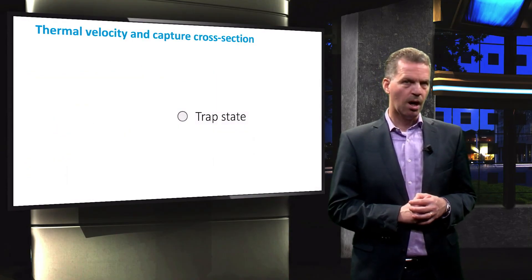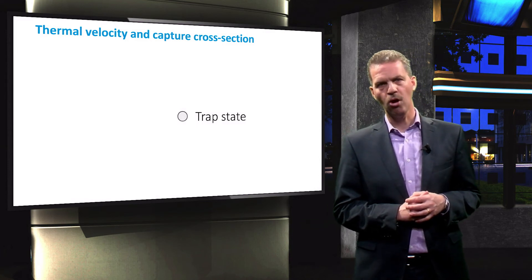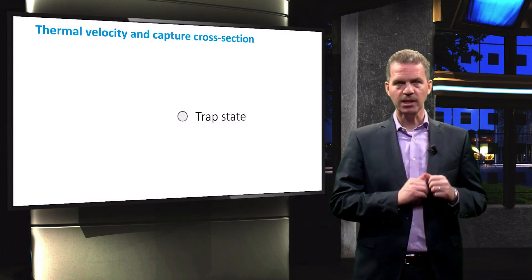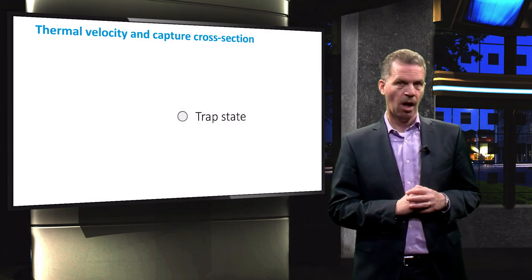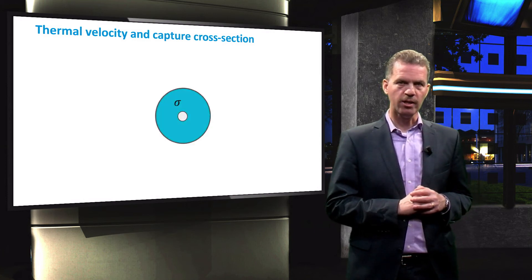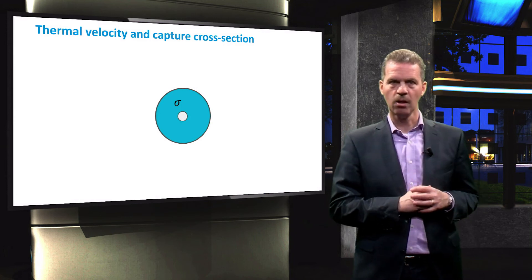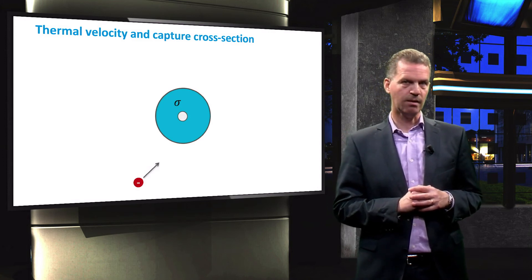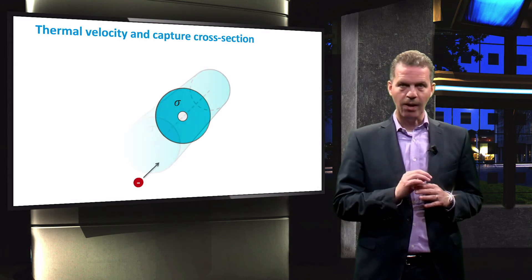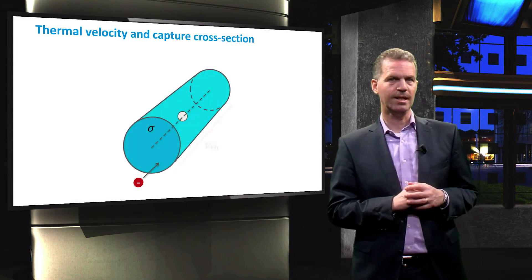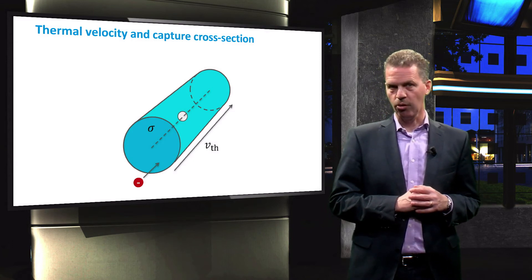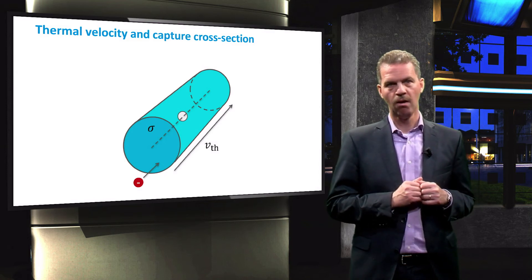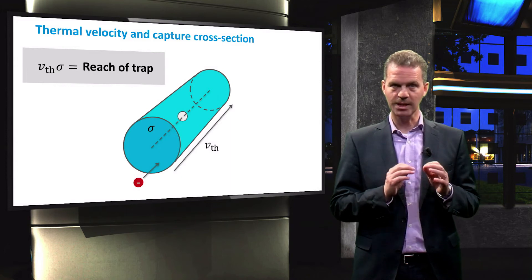As mentioned before, I would go into more detail about the thermal velocity and the capture cross-section, and I will do that with an example. Imagine a trap state inside a material. The capture cross-section can be visualized as an area around the trap state which we draw as a disk. Now imagine an electron approaching the trap state from the bottom left. If we now expand the circle to a cylinder with a length equal to the thermal velocity, we see that the thermal velocity and the capture cross-section together form the reach of the trap state in which it can capture an electron.